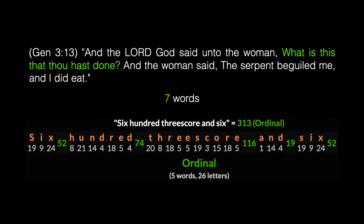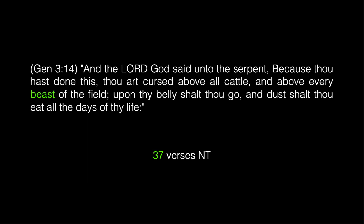Verse 13: 'And the Lord God said unto the woman, What is this that thou hast done? And the woman said, The serpent beguiled me, and I did eat.' This is Genesis 3:13. And it just so happens that '600 threescore and 6' has a value of 313. We're going to count the words that God speaks to the woman — here he speaks seven words. Verse 14: 'And the Lord God said unto the serpent, Because thou hast done this, thou art cursed above all cattle and above every beast of the field. Upon thy belly shalt thou go, and the dust shalt thou eat all the days of thy life.' The word 'beast' occurs in 37 verses of the New Testament.